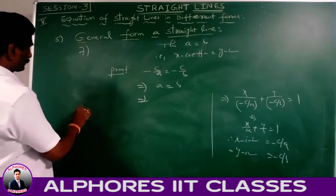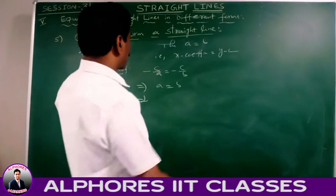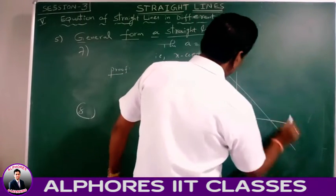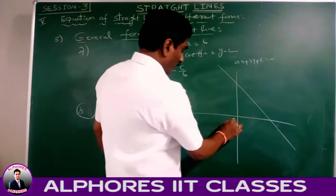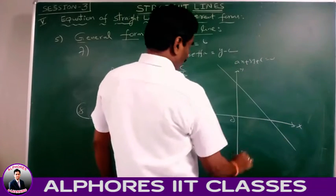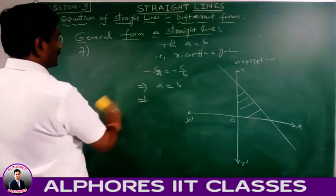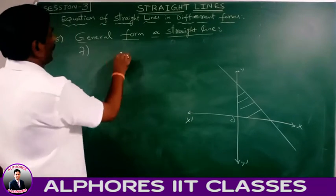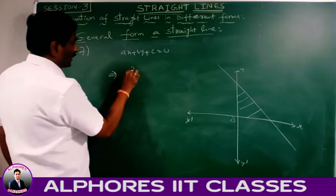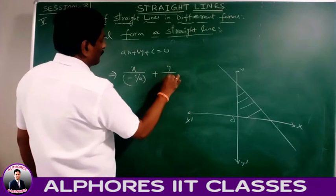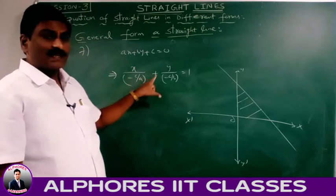Point 8: what is the area of the triangle formed by the line ax + by + c = 0 with the coordinate axes? Converting to intercept form gives x/(-c/a) + y/(-c/b) = 1, where x-intercept = -c/a and y-intercept = -c/b.